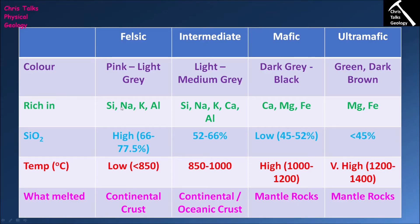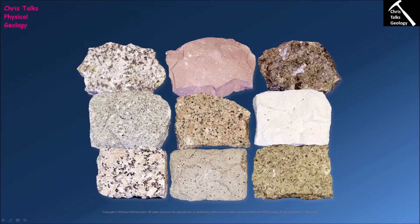Looking at the chemistry of our samples, felsic igneous rocks are very rich in silicon, sodium, potassium, and aluminium, meaning we get large amounts of sodium and potassium aluminium silicate minerals. Potassium feldspar, which contains lots of potassium as the name suggests, has a very distinctive pink colour. So it's not uncommon for felsic igneous rocks to have a slightly pink colour because of the presence of potassium feldspar — you can see this in several of the rock samples here.